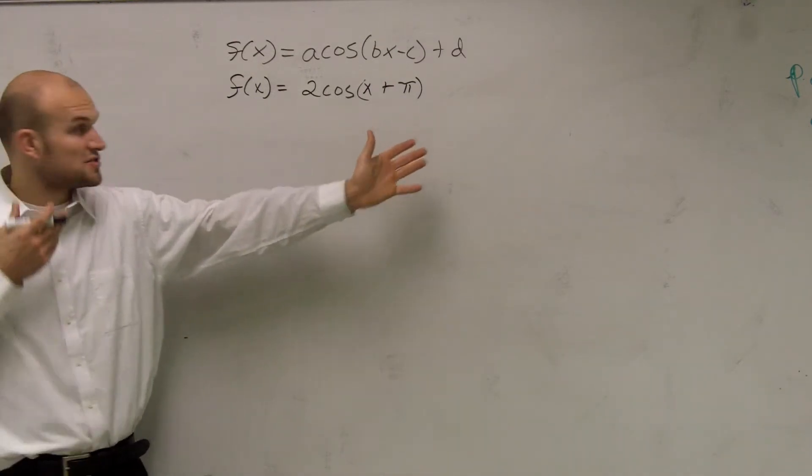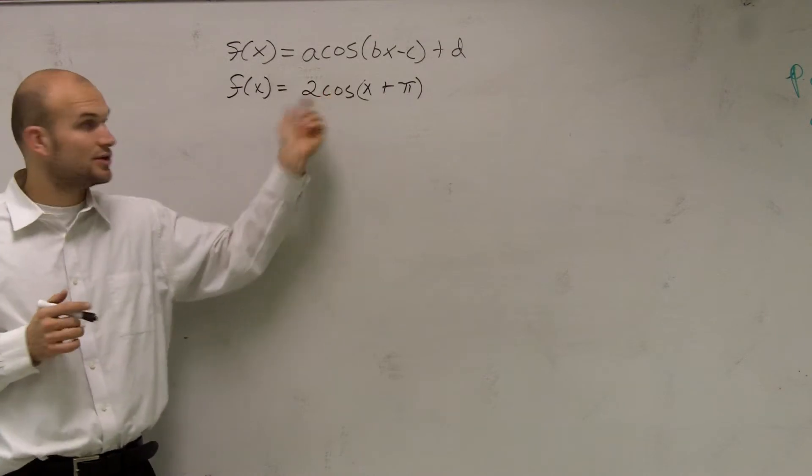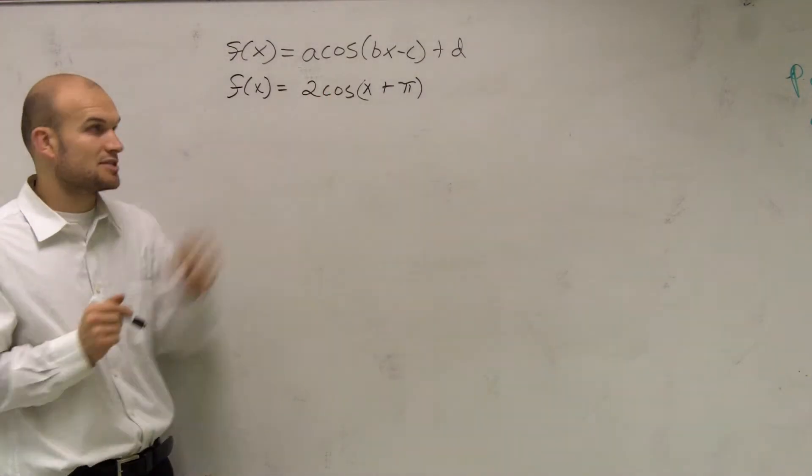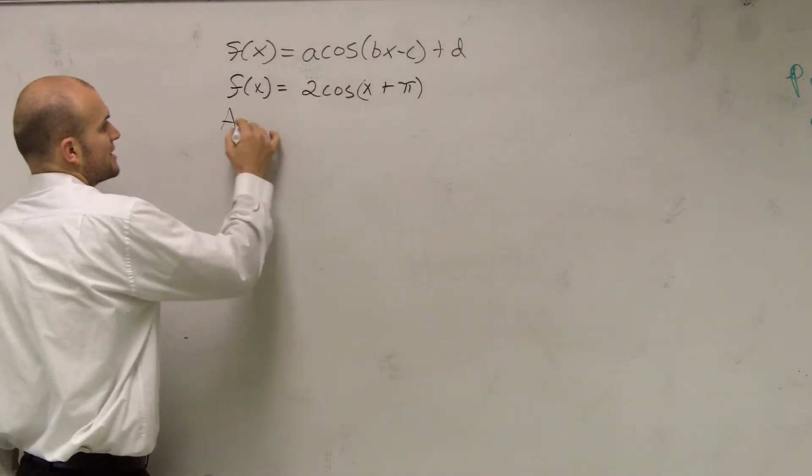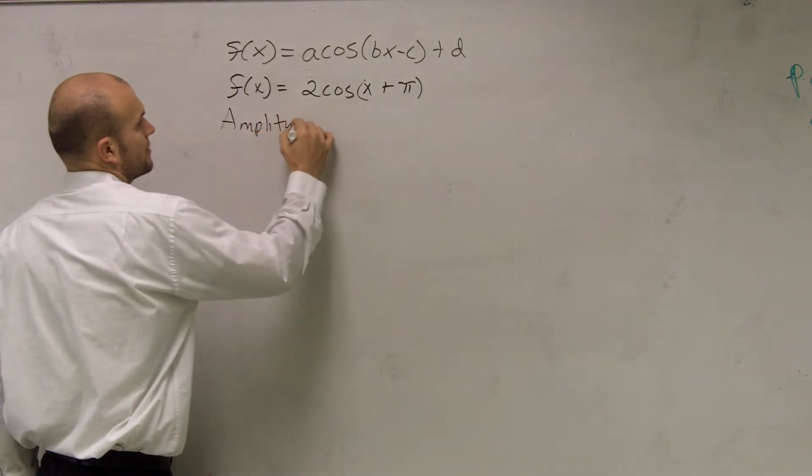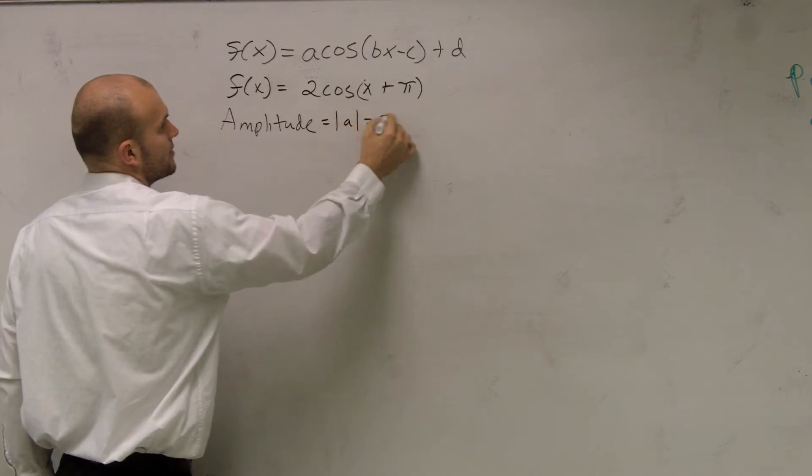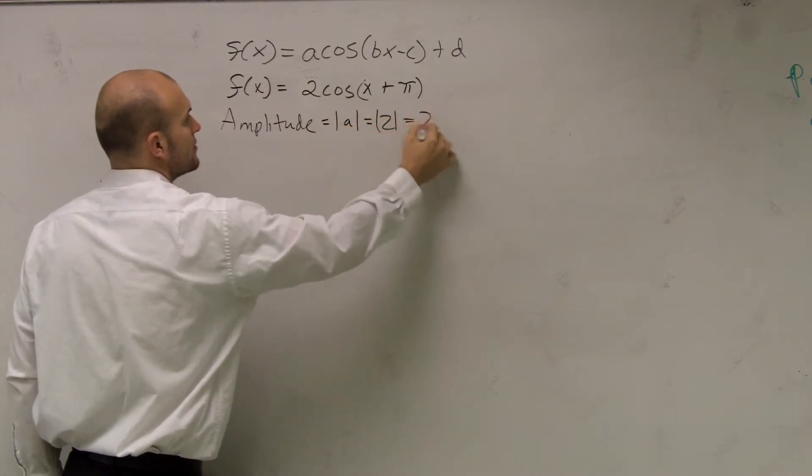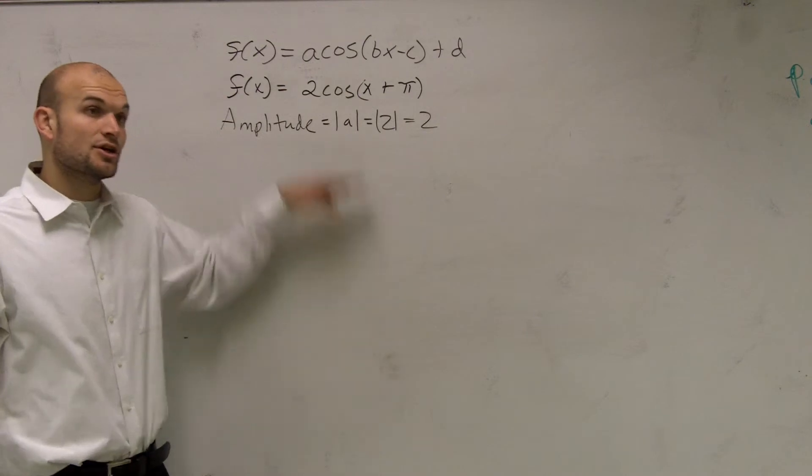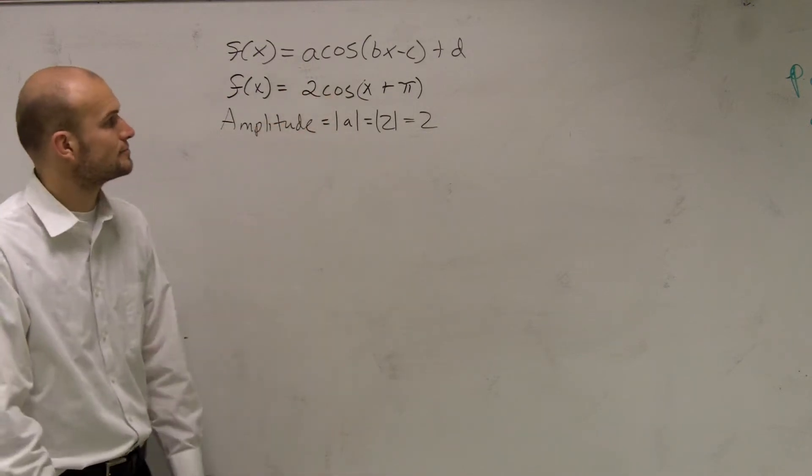So the last one I want to go through is just a transformation. This one, you guys notice our amplitude. Remember, the absolute value of A has been changed to 2. So your amplitude is the absolute value of A, which in this case is the absolute value of 2, which equals 2. Therefore, my graph is going to go up 2 and down 2.